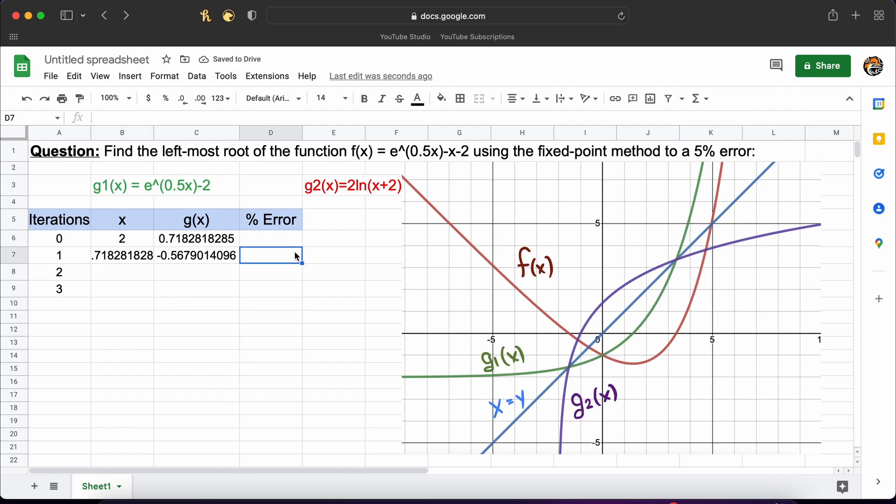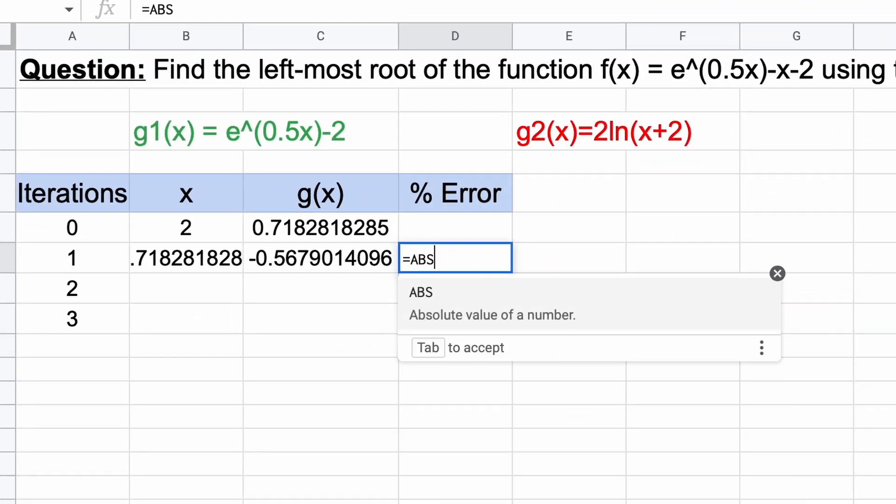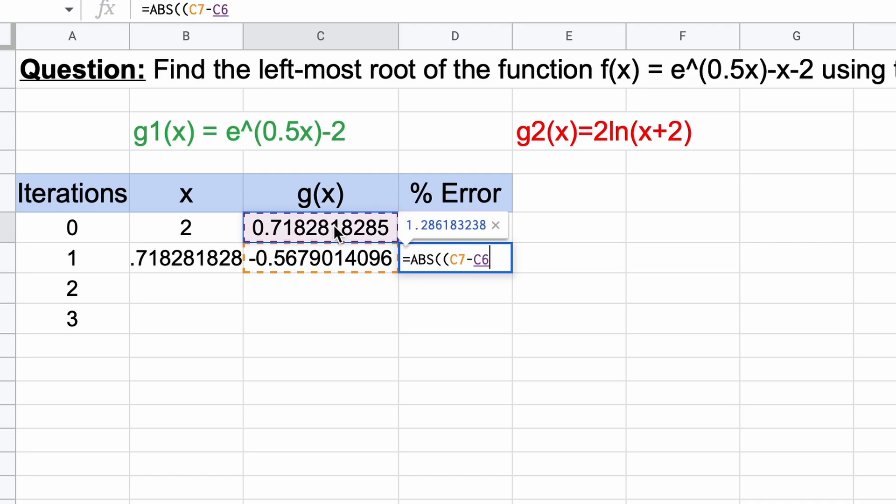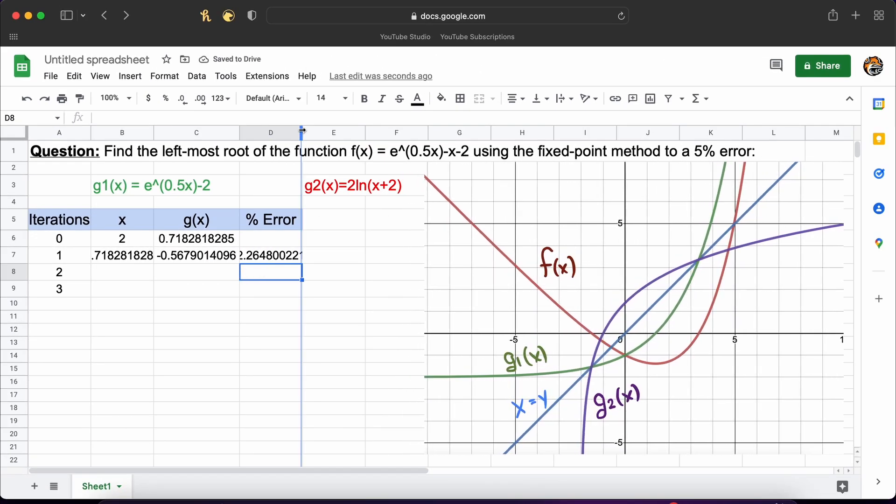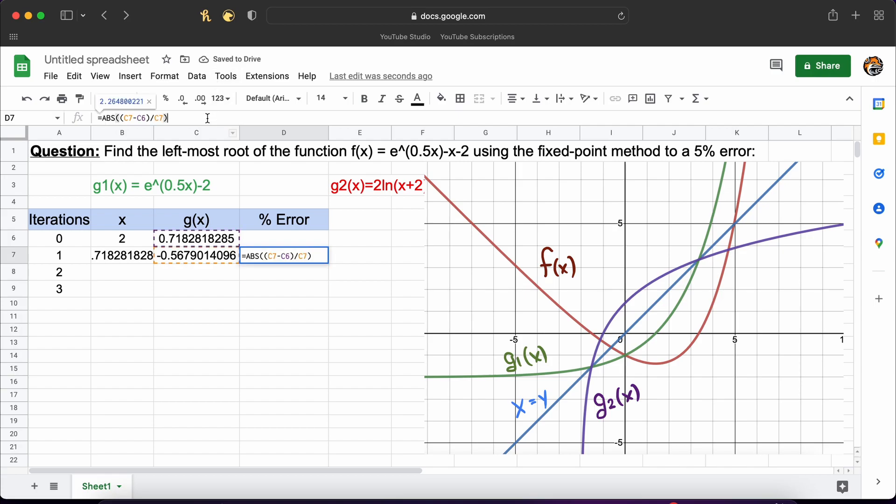Now we can also add in our percent error by taking the absolute value of our current x value, minus our previous x value divided by our current x guess. Then I will set these cells to percentages and as you can see here we have an initial percent error of 226%.